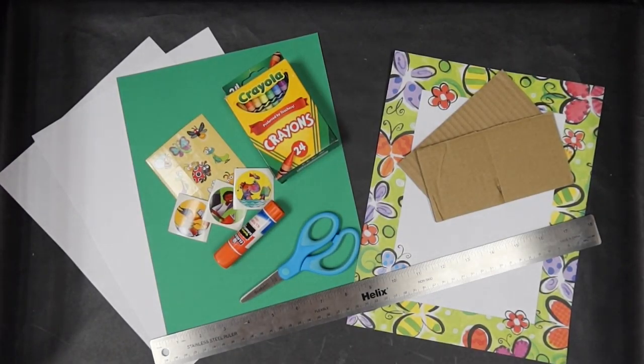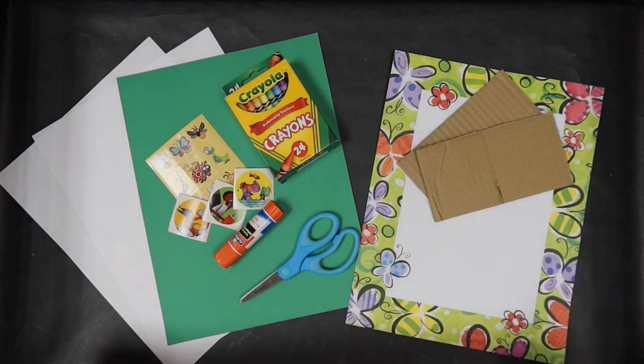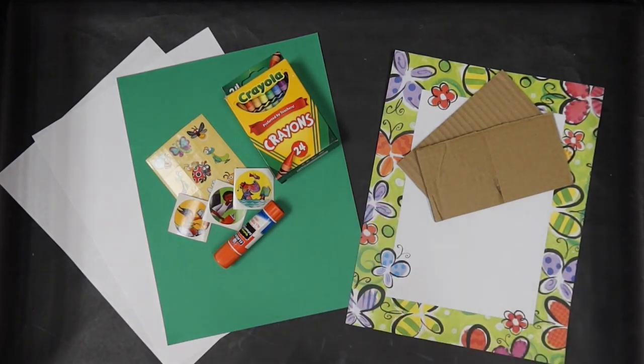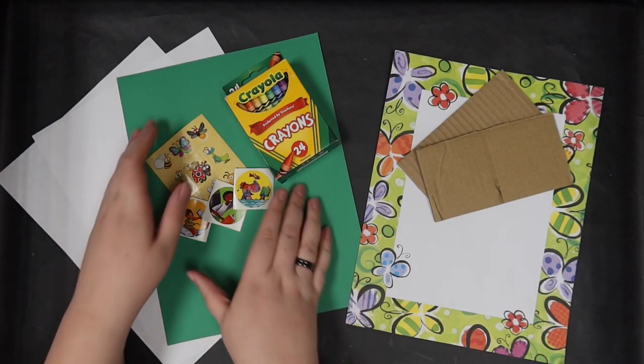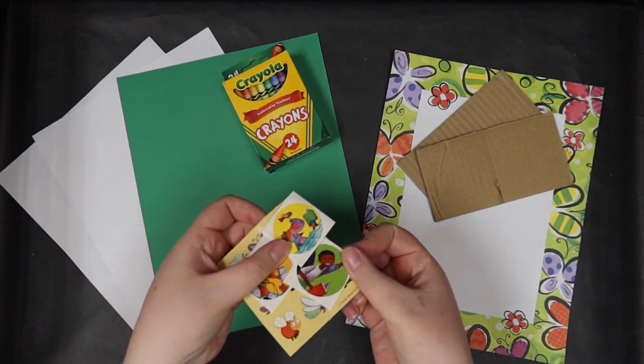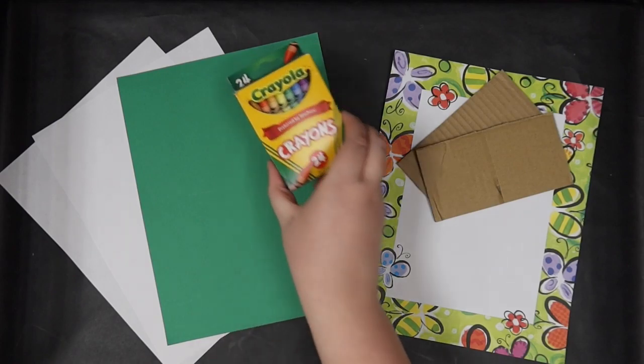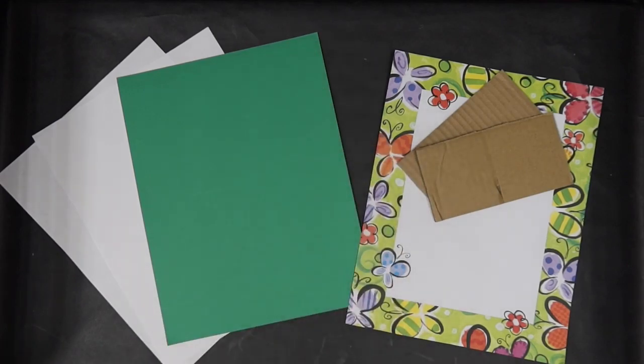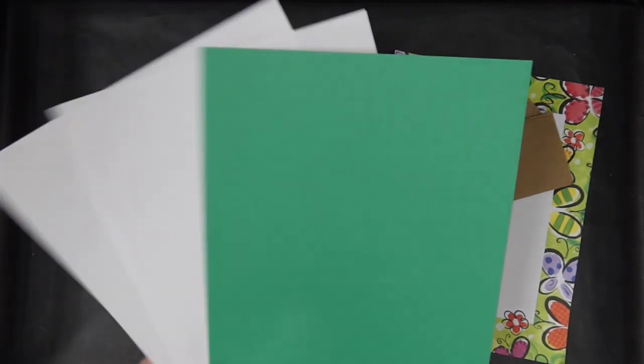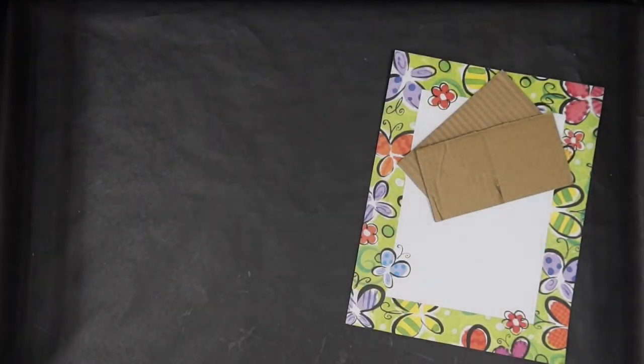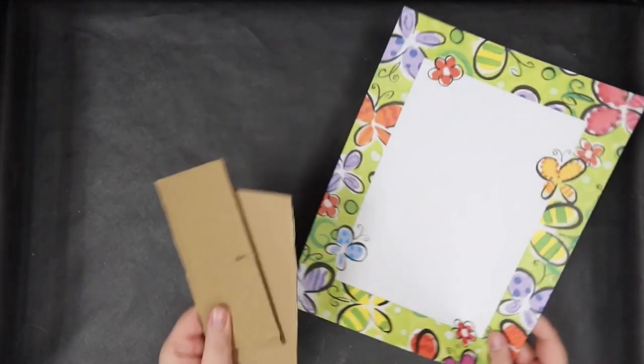Let's get started with our materials for today. First off we have a ruler, we have some scissors, a glue stick, stickers to decorate our book, crayons to color in our book, one sheet of cardstock, two sheets of printer paper, and for optional strength you can use cardboard and for extra decoration you can use stationary paper.